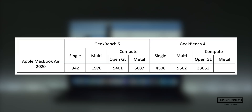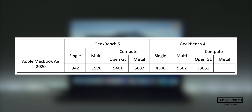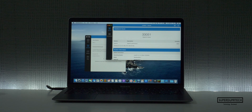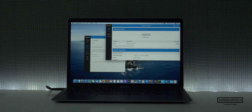Using Geekbench 4 I also ran their compute test to see how well the OpenCL engine ran, getting a score of 33,051, whereas for the Metal lineup of tests I got a score of 28,695.